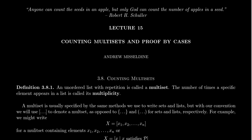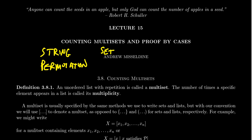A string was an example of an ordered list with repetition. We've also introduced the notion of a permutation — a permutation was an ordered list without repetition. We've introduced the notion of a set, which is where we spent our entire first unit in this lecture series. In the language of lists, a set is an unordered list without repetition.